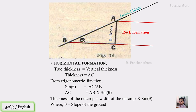If you know the width of the outcrop and the ground slope, you can calculate the thickness of the formation. So A is the thickness of the formation. W (A-B) is the width of the formation, and sin(θ) is the slope of the ground. In a horizontal formation, knowing the width of the outcrop, we can calculate the thickness. Is that clear?